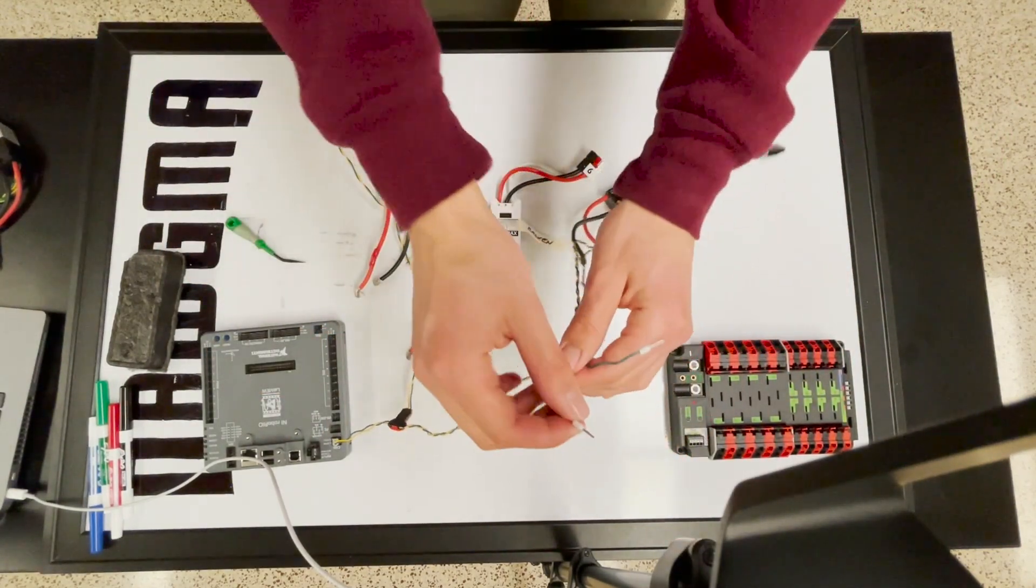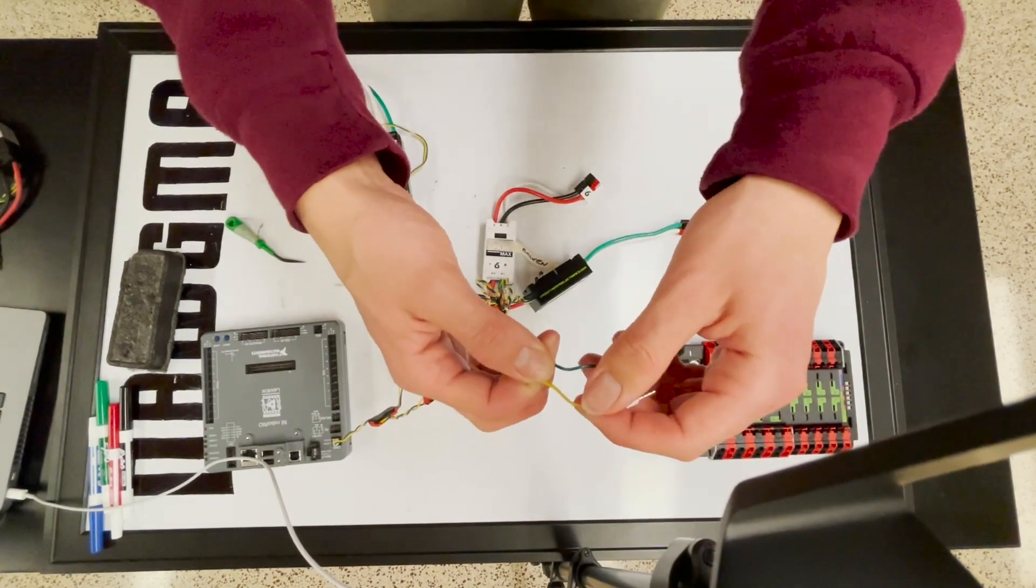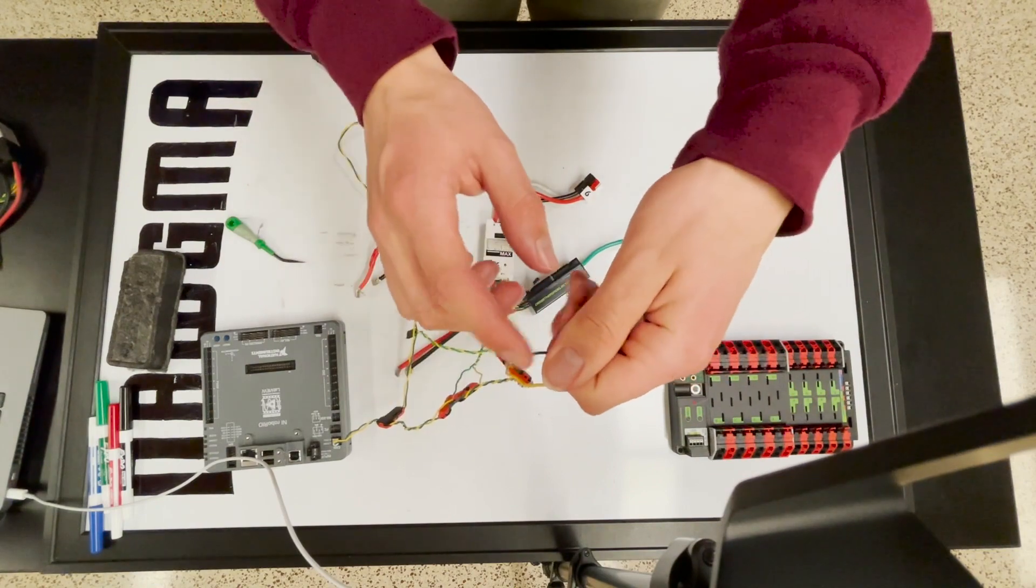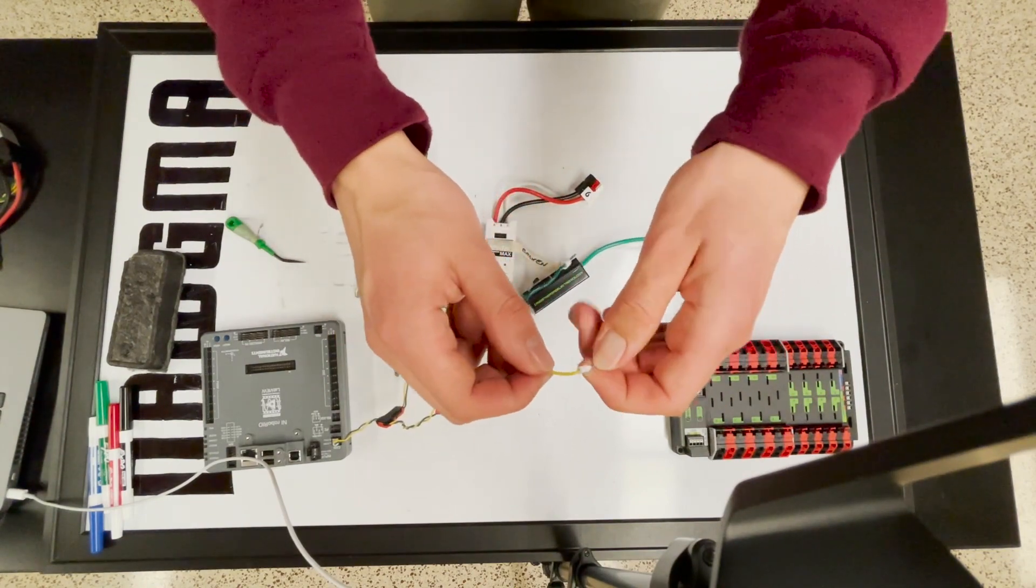So to connect these devices together, you can take your CAN wire, consists of two wires, the green and the yellow. The green wire is known as the CAN low signal, CAN L, and the yellow wire is known as the CAN high signal, or CAN H.